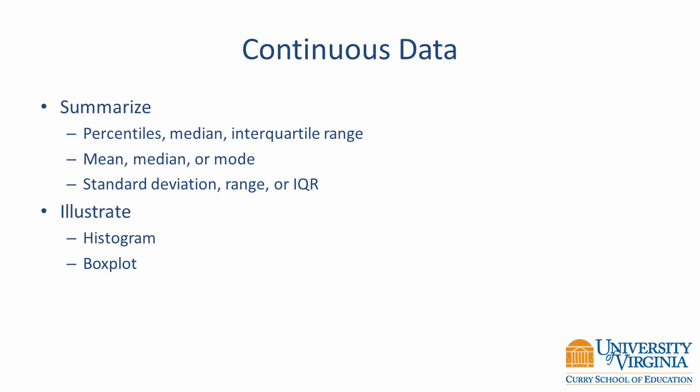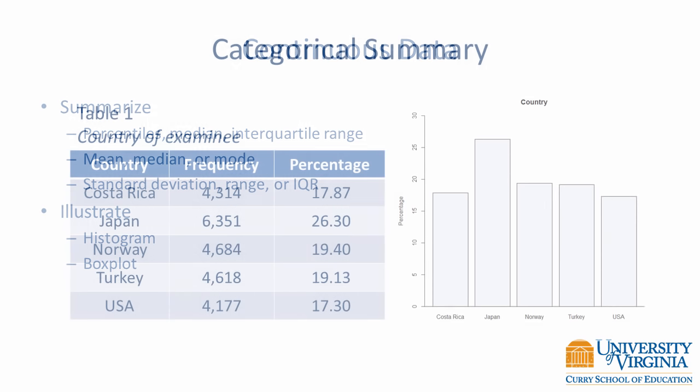Now let's return to the PISA data and look at some examples. This slide shows a summary for the country variable. Data are summarized in tabular form as frequencies and percentages, and illustrated as a bar chart. Most examinees come from Japan, while the fewest come from the United States. A key feature of the bar chart is that the bars do not touch each other, indicating that the values are categorical and not continuous.